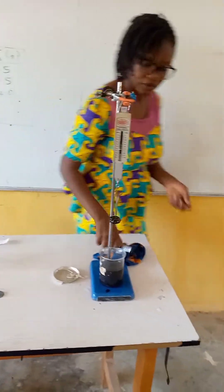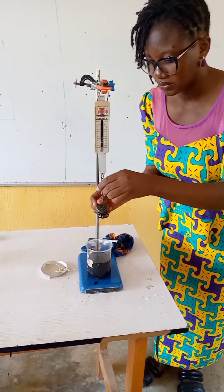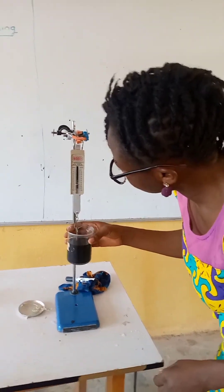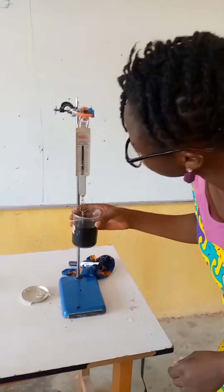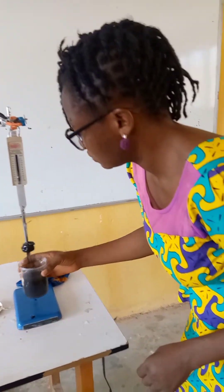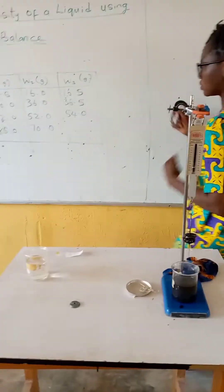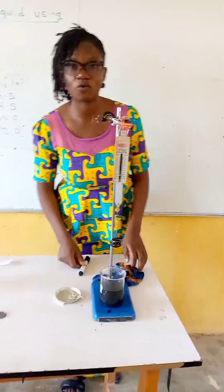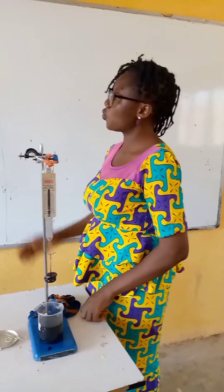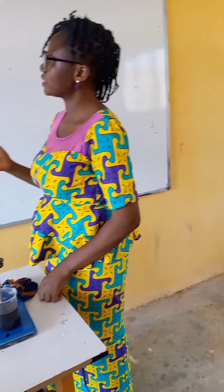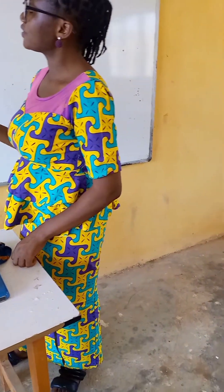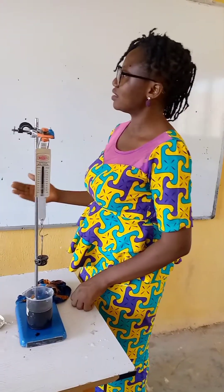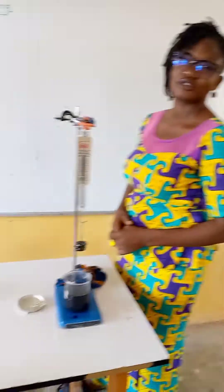And lastly, we have 72.0 grams. From what we can see, we notice that the weight in air is greater than the weight in water, while the weight in the other fluid is greater than the weight in water. Thank you very much.